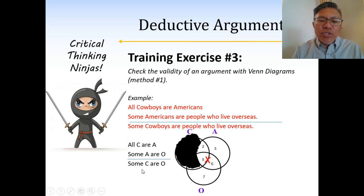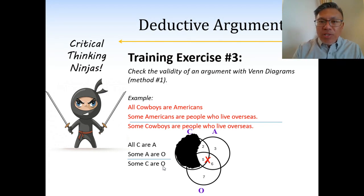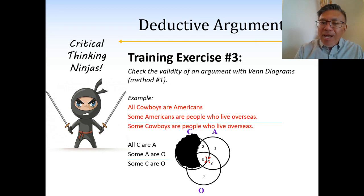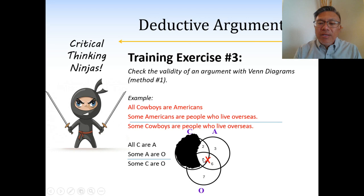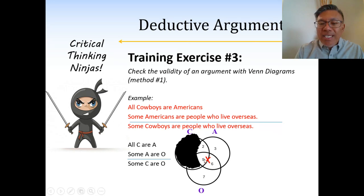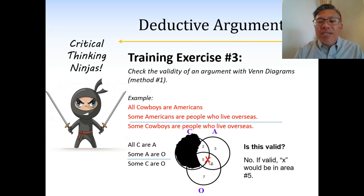Now let's check our conclusion: some cowboys are people who live overseas — some C are O. If we were to draw this claim, the X should be in section 5. But notice the X is not in section 5 — it's right at the border between 5 and 6, so it's not clear. This means the conclusion is not valid. If it were valid, there'd be an X right in section 5, not on this border. So we say: not valid.